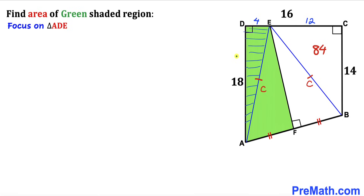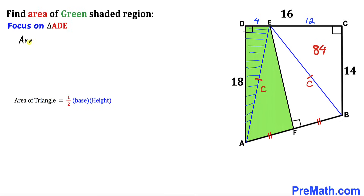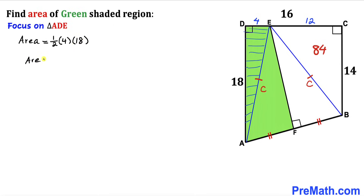Next, let's calculate the area of right triangle ADE. Area = ½ × base × height. Base is 4 and height is 18, so Area = ½ × 4 × 18 = 36 square units.